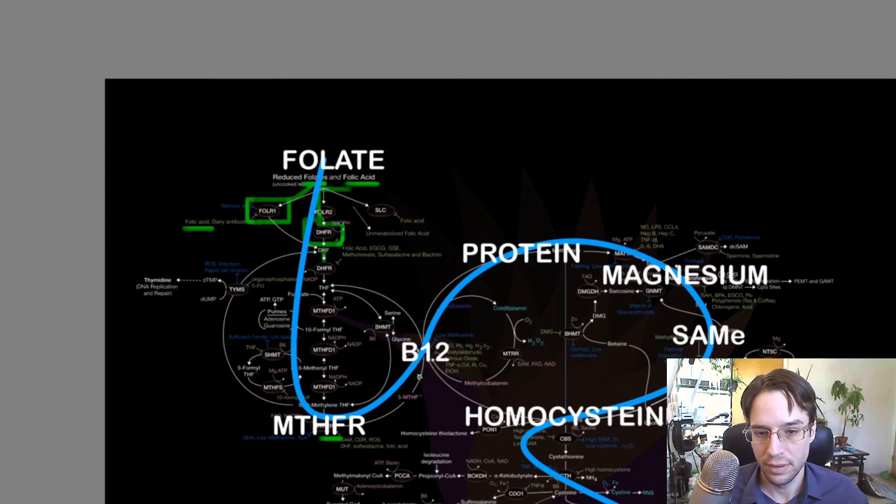So normally, when we are running this system, folate gets converted. It merges with B12 and recycles homocysteine back into methionine, which is protein. That then uses magnesium to turn into SAMe. SAMe runs our dopamine, serotonin, melatonin, all types of stuff. It's pretty much our brain chemical factory. And without this SAMe, it doesn't function properly.